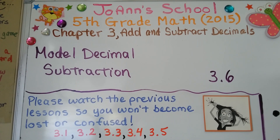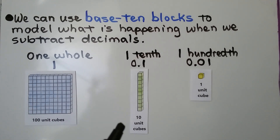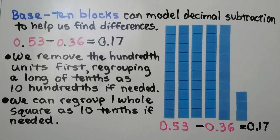Lesson 3.6: Model Decimal Subtraction. The previous lessons for Chapter 3 are linked in the description if you missed them. We can use base 10 blocks to model what is happening when we subtract decimals. We use 100 unit cubes as one whole, a long of 10 as a tenth, and one unit cube as a hundredth. Base 10 blocks can model decimal subtraction to help us find differences.